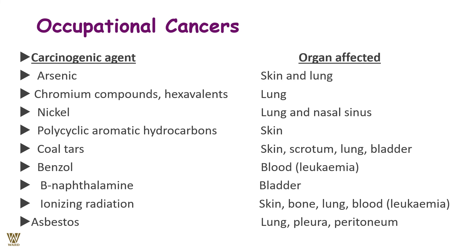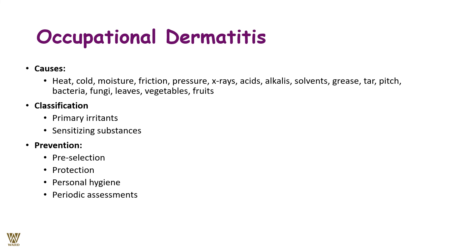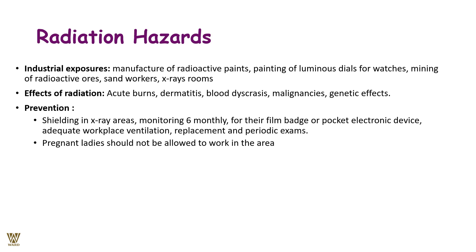Occupational cancers are caused by carcinogenic agents such as arsenic, chromium, and nickel; polycyclic aromatic hydrocarbons from coal tar; and benzene. Organs affected include skin, lungs, nasal sinus, scrotum, and bladder. Occupational dermatitis results from exposure to heat, cold, moisture, friction, pressure, X-rays, acids, alkalis, solvents, grease, tar, fungi, leaves, vegetables, and fruits coming into contact with the skin. Classification is primarily irritant or sensitizing. Prevention includes pre-selection, personal protection, personal hygiene, and periodic assessment.